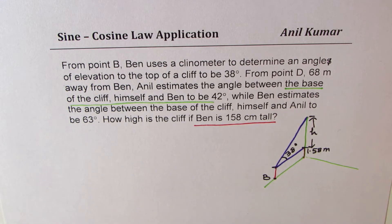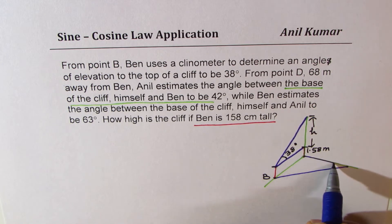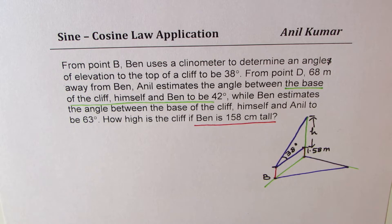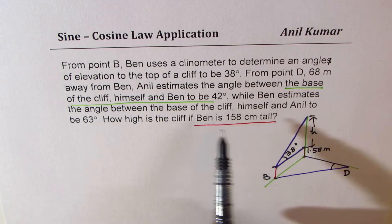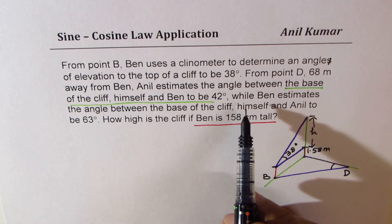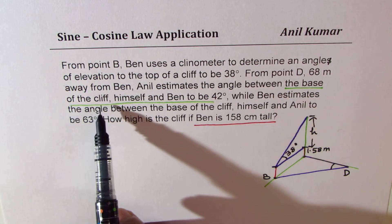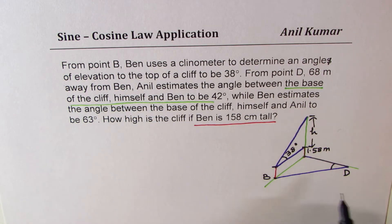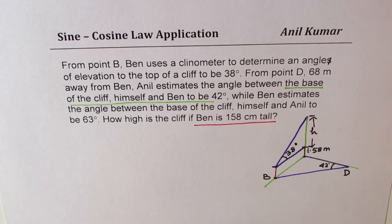So that becomes the angle. This is the position. We'll just join it like this. And this is the point D for us. And the angle is given to us as 42 degrees. Anil estimates angle between base of the cliff, himself, and Ben as 42 degrees. So this is the angle 42 degrees. And the distance between B and D is given to us as 68 meters.